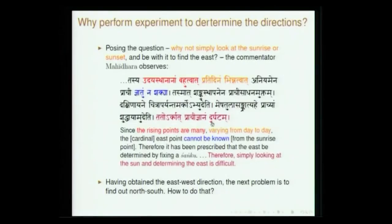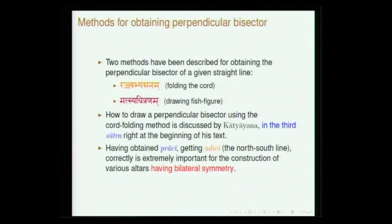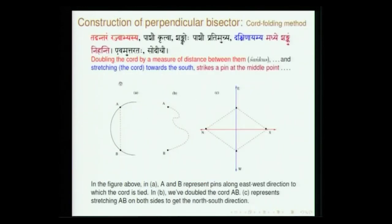Having determined the east-west direction, the next problem is to find the perpendicular direction. This is done in two ways. One is Rajwabhyasanam — folding of the cord. You have a rope twice the length AB; by folding it, you mark the center. Then tie it at the ends and pull it on both sides — one side gives north, the other gives south, giving the perpendicular to the east-west line. The other method is Matsya Chitranam — drawing a fish figure — which is what school students do with a compass: draw semicircles on both sides to get the perpendicular.